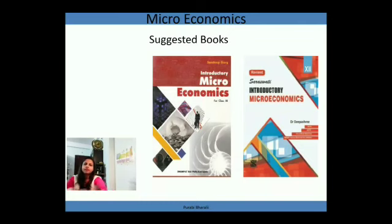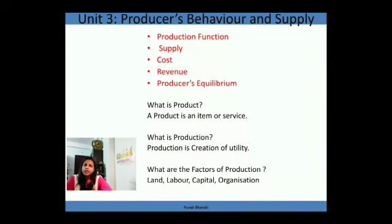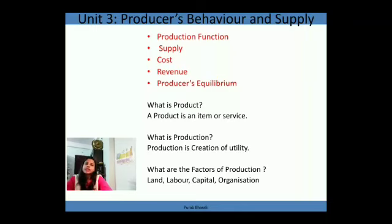For Unit 3 — Producer Behavior and Supply — as you can see on screen, we have five sub-topics: production function, supply, cost, revenue, and producer's equilibrium. We will discuss all these topics one by one. Today we are going to take the first topic: production function. But before discussing it directly, we must know some basic concepts of producer behavior.